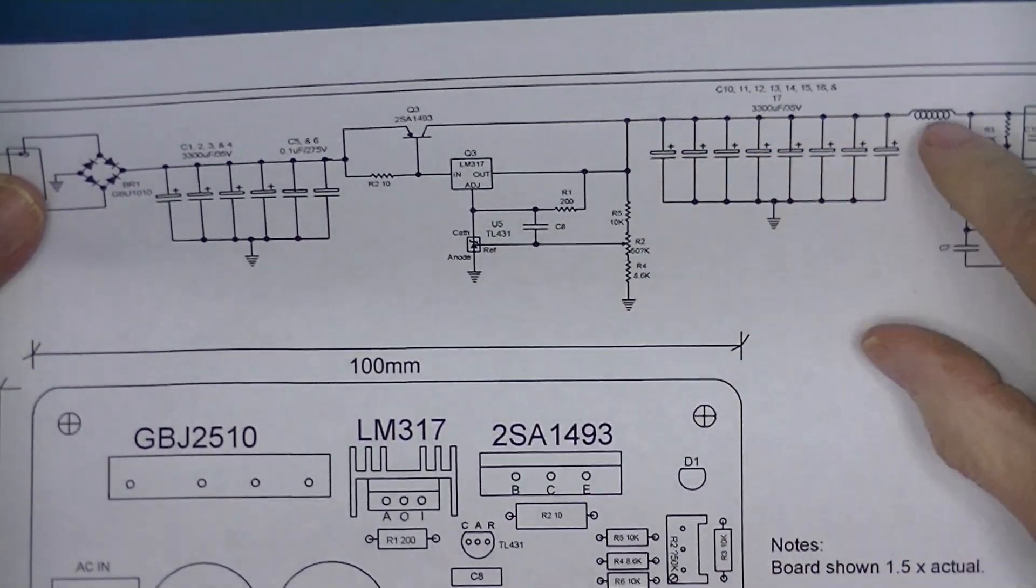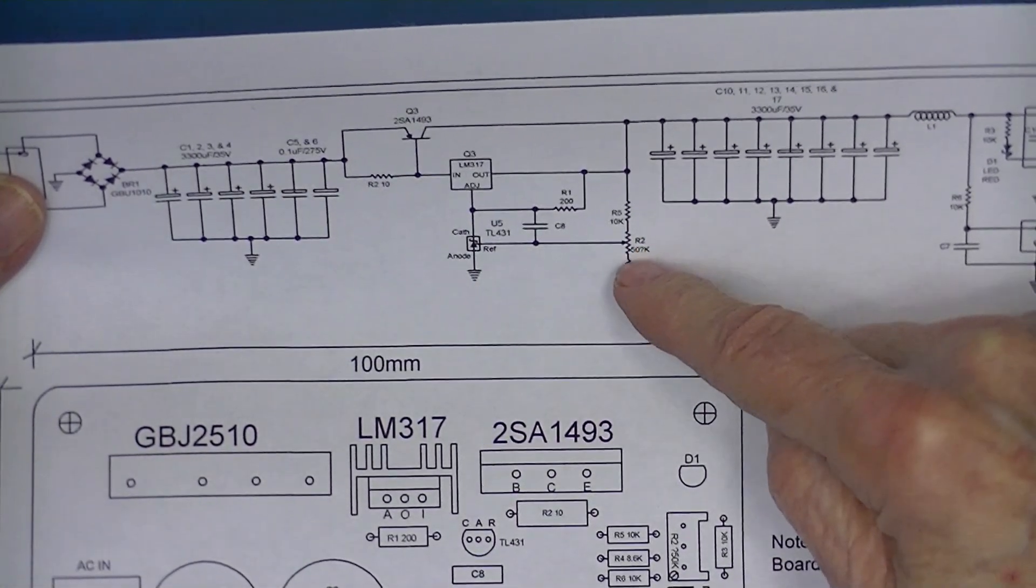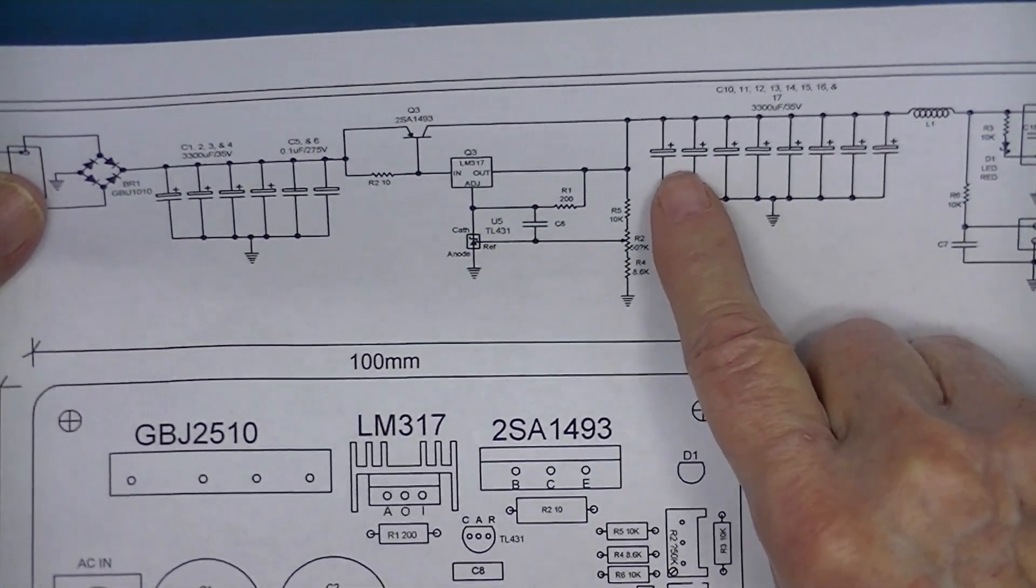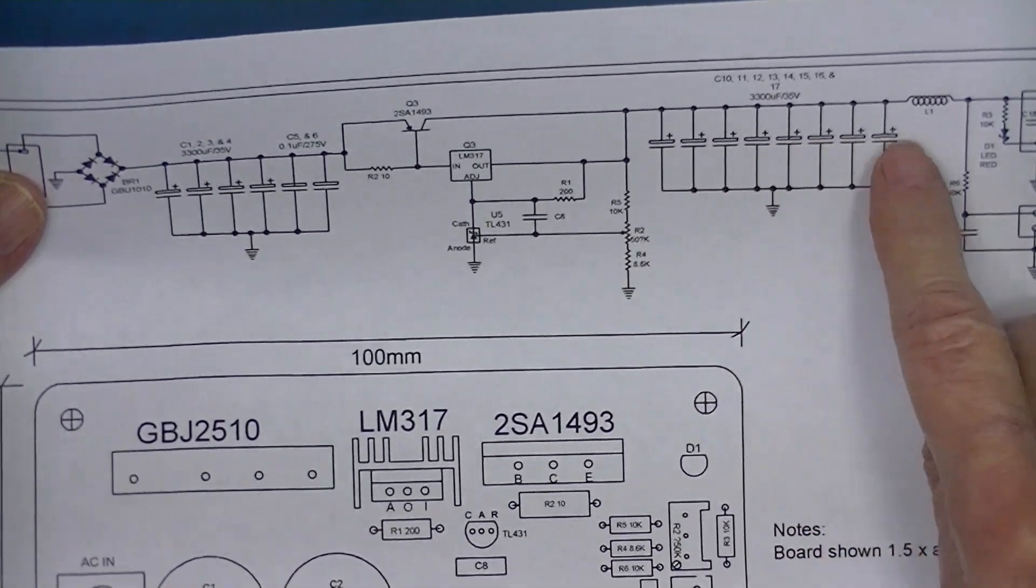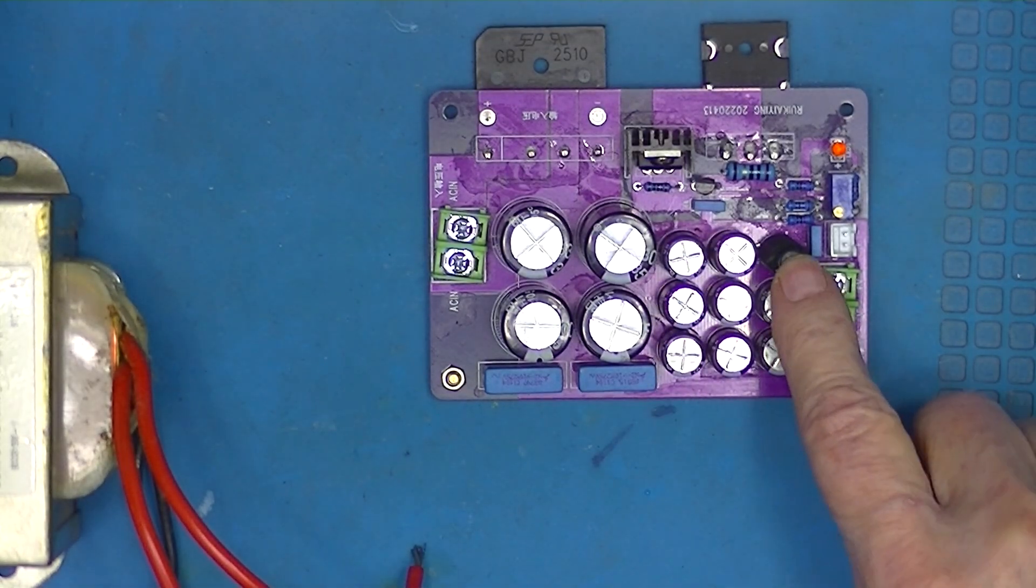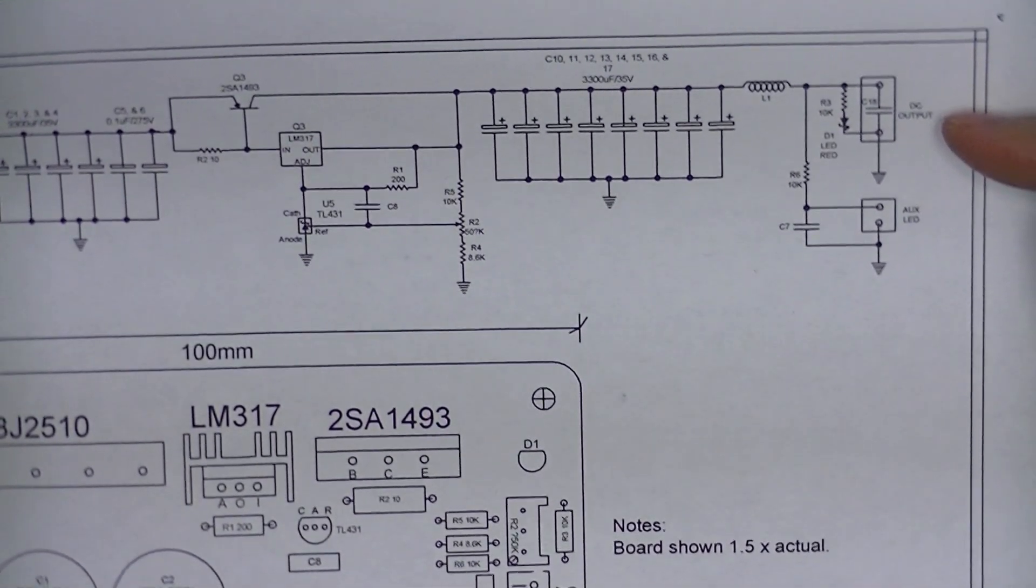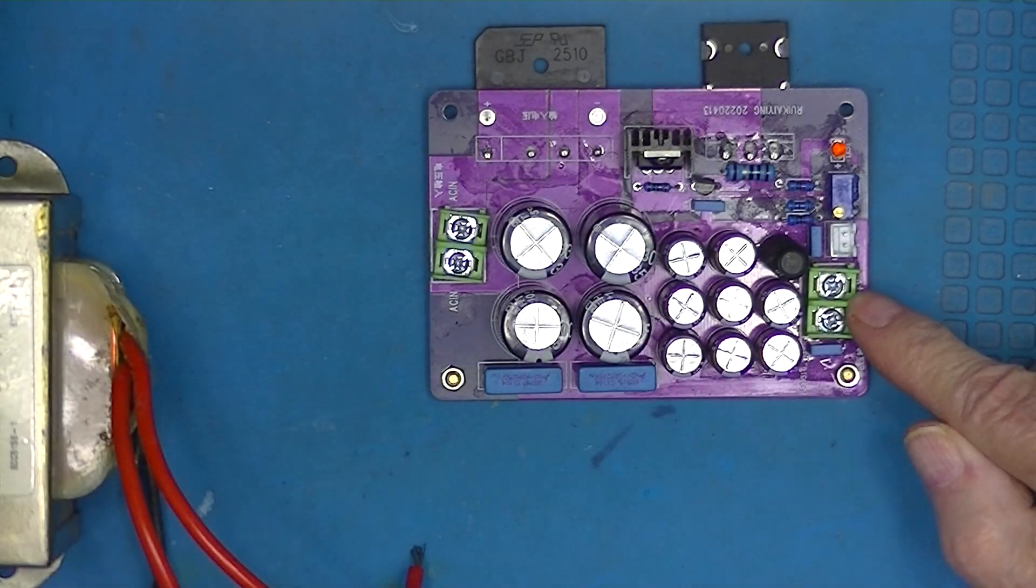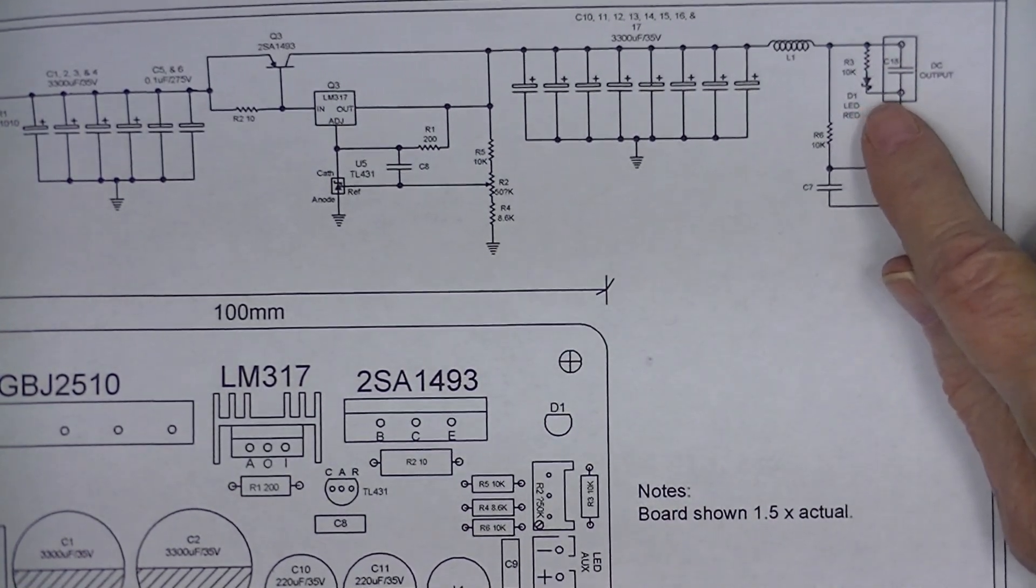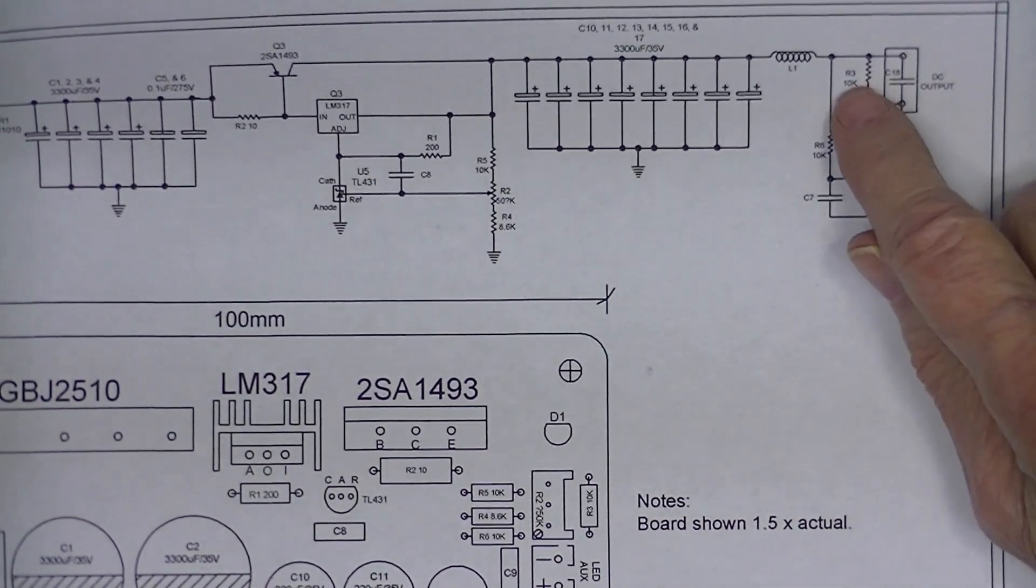A sample of the output voltage is taken and sent to the TL431. Then there's a bank of output capacitors followed by an inductor. That's these capacitors and this inductor, it goes to two output jacks. One labeled DC output which is here and in parallel with that is a 10k resistor and an LED so the LED derives its power from here, current limiting through the 10k resistor.